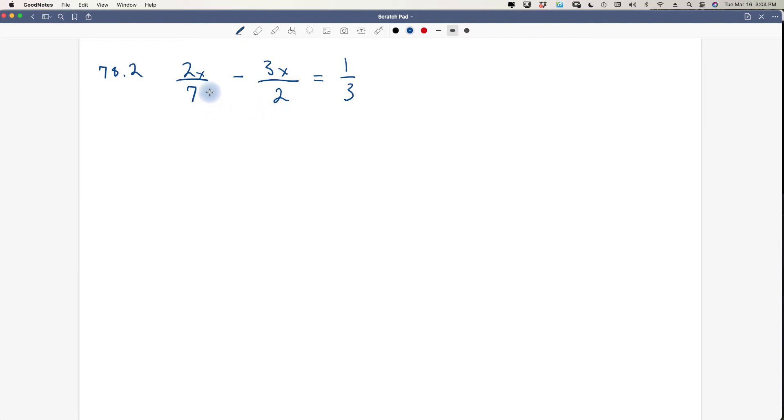So we are going to take 42 divided by 7 and we get 6. So we say 6 times this whole fraction, so that's going to be 12x over 42. And the same thing here. We are going to take 21 because 42 divided by 2 is 21. 21 times 3 is 63x over 42.